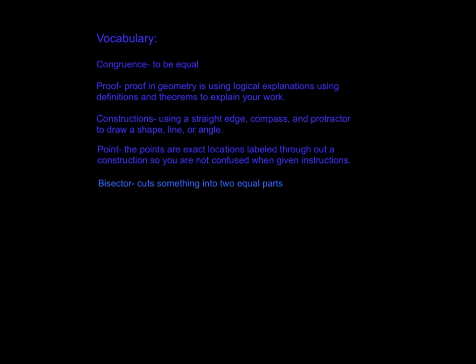A bisector is something that cuts your construction, whether it be an angle or a segment, into two equal parts.